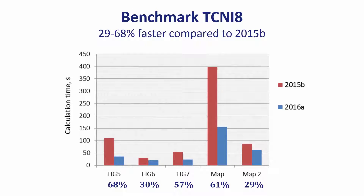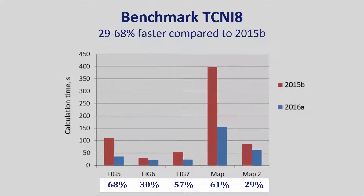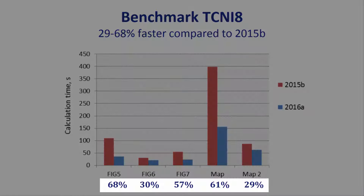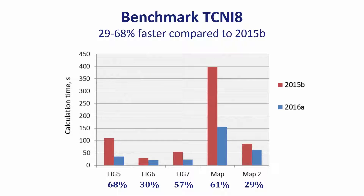The loading time for TC-NICL has also been shown to be reduced by about half. For typical nickel-based super alloys, several calculations, which can be found in the extended information flyer on our website, were shown to be up to 68% faster when comparing Thermo-Calc 2016a to Thermo-Calc 2015b.